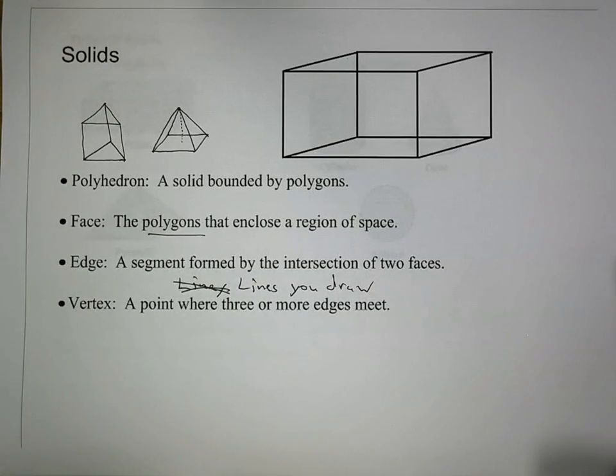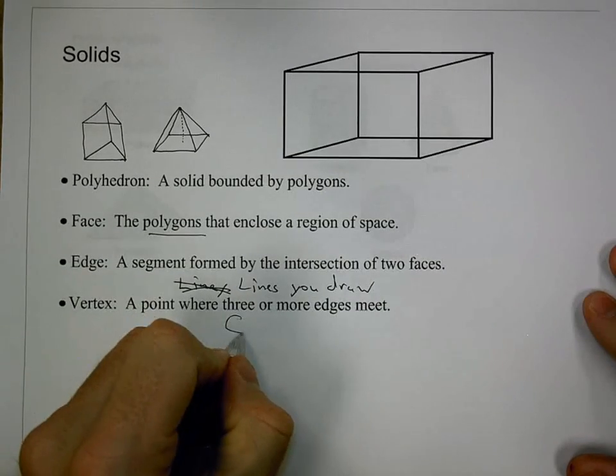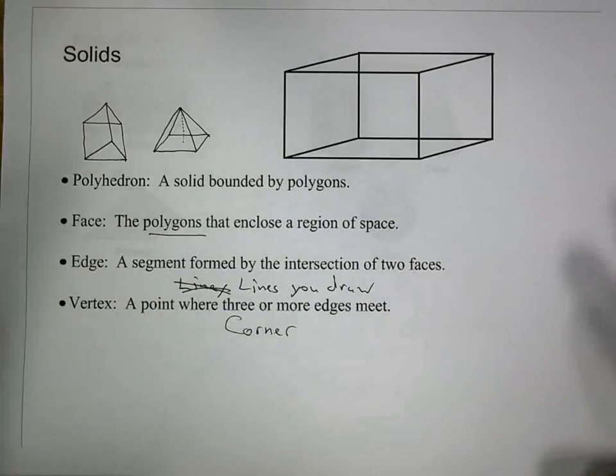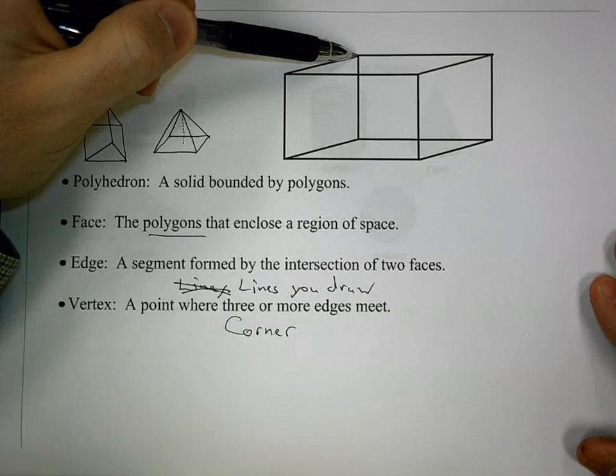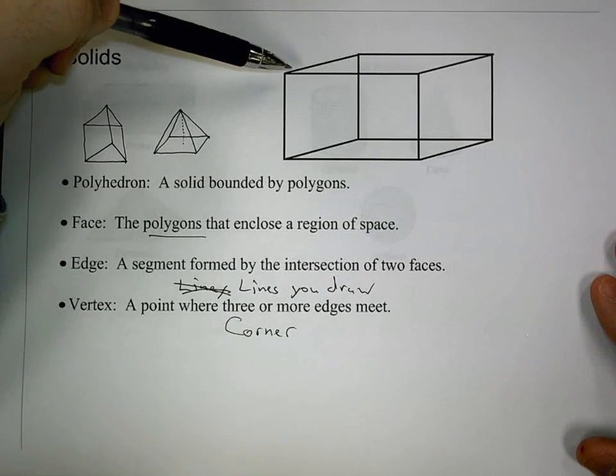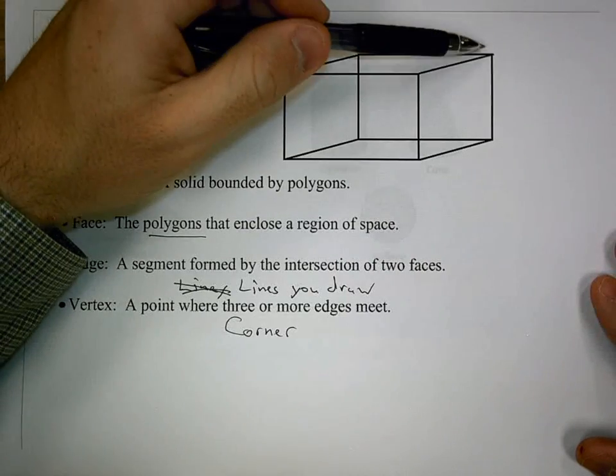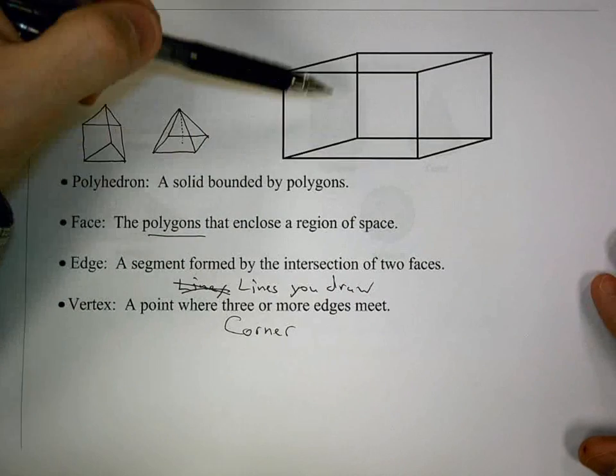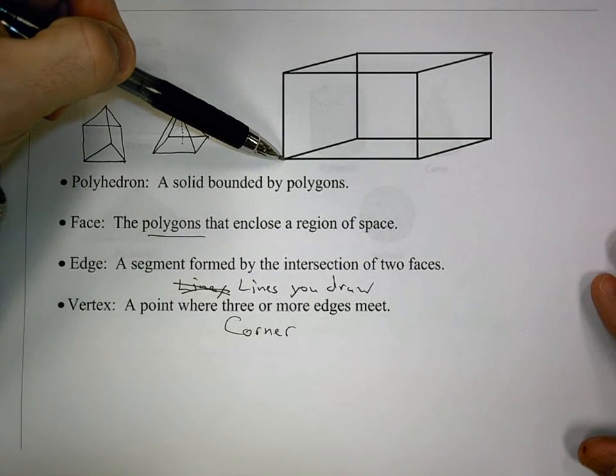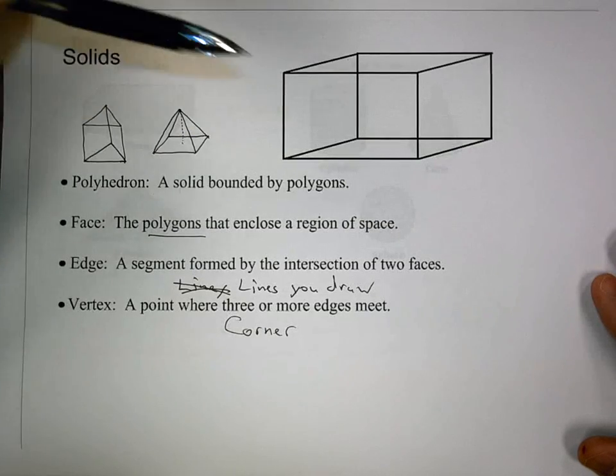The vertex is a point where three or more edges meet. We could think of that as the corner. In this rectangular prism, I have these edges where the three lines, or these corners. These vertices, or vertex, where three lines meet. It's like the corner of the box. If this was a room we were standing in, that corner would be down here, where those three lines meet. The walls meet the floor. That would be a vertex.